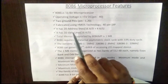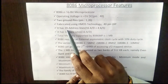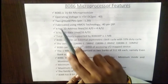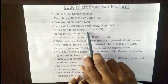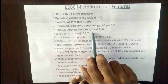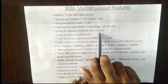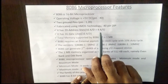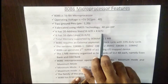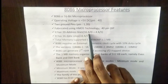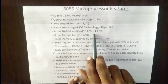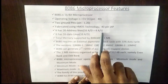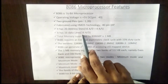Of the 20 address lines, 16 lines are multiplexed address and data lines. There are also four additional address and status lines, which can be used as either address lines or status lines. Combined, the 8086 microprocessor has a total of 20 address lines and 16 data lines.